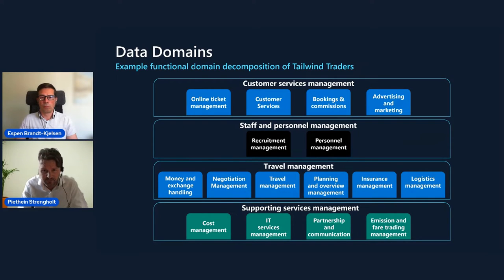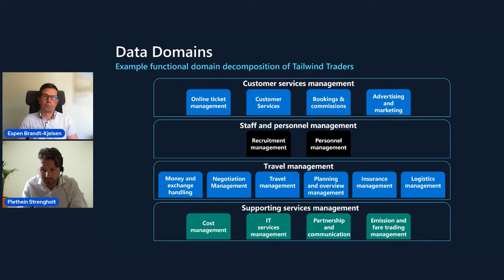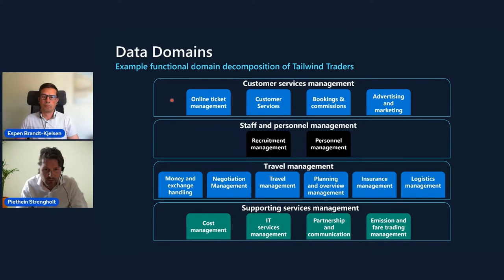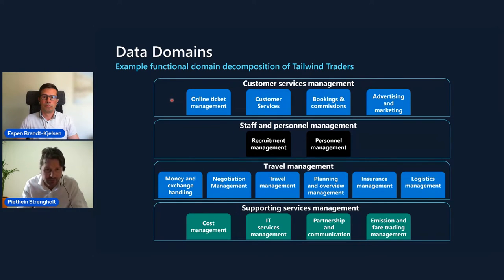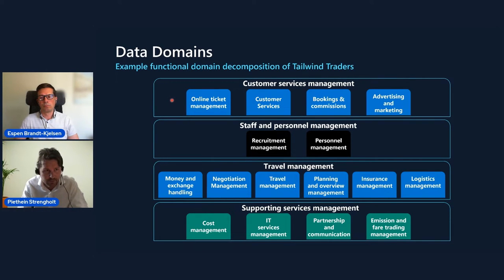What you see here on the screen is such a decomposition. We created a fictitious company called Tailwind Traders. The overview you see here is called a business capability map. This company needs to master all of these business capabilities in order to be successful. For example, you see here a business capability called online ticket management. Most of your people are also organized around these business capabilities, share the same language, and use the same vocabulary. The same holds for the applications behind such a business capability — those are typically well aligned and tightly connected based on the cohesion and the activities they need to support.